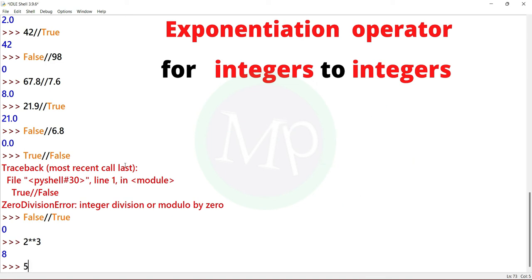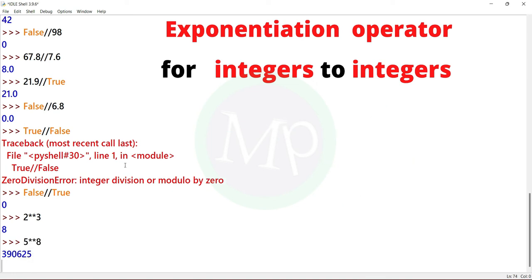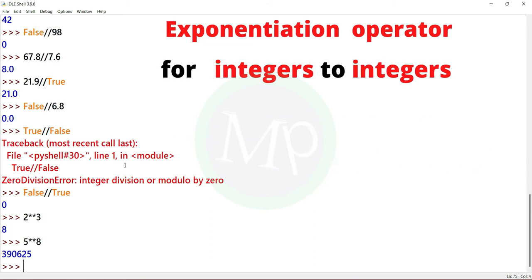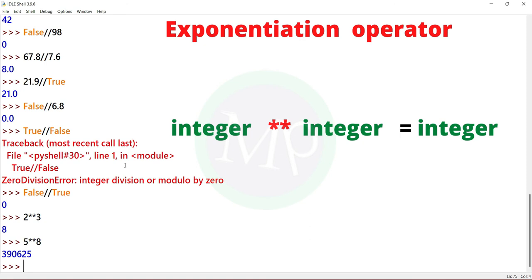Another example: 5 double star 8. Output is 390625. This is the result of 5 power 8. For integers to integers in the exponential operator, the result is also integer.